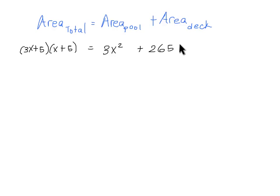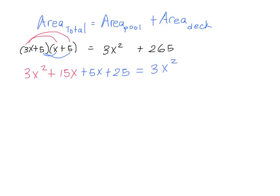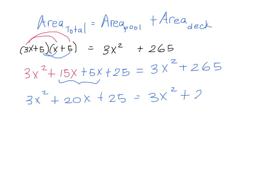Briefly recapping: the left side is the area of the whole thing from the dimensions, 3x² is the area of the pool, and 265 is the area of the deck as given in the original question. Now we can multiply out the expression on the left side. We get 3x² + 15x + 5x + 25, which is equal to 3x² + 265.